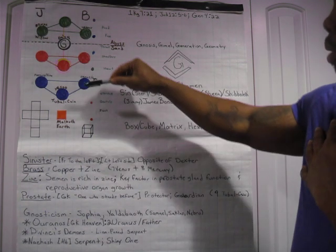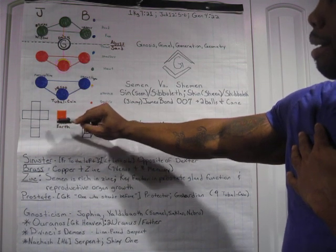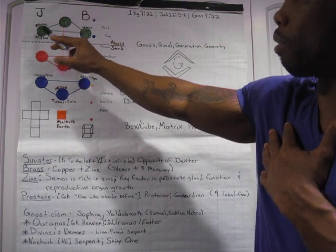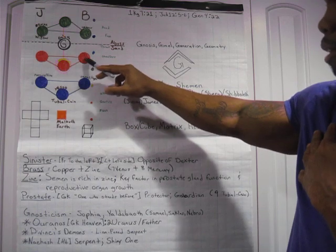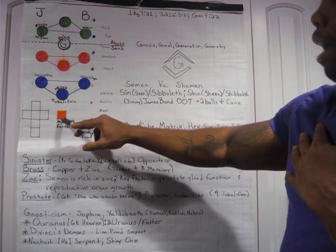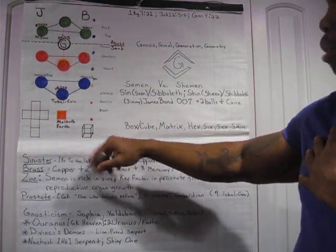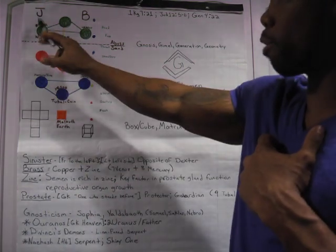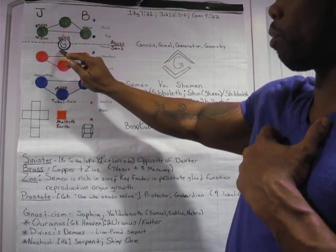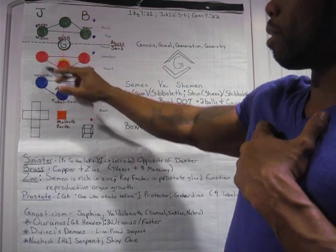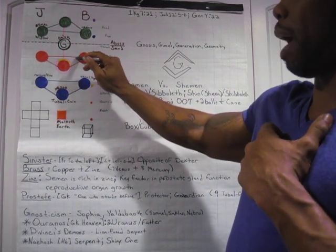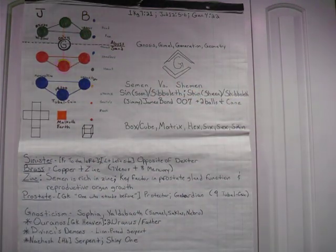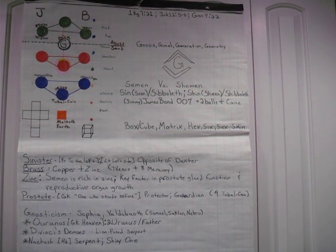What Yaldabaoth didn't know when he created humans was that there was a divine spark from his mother embedded in us. The point of the Gnostic story is to get us to awaken that divine spark so we can raise back up to our rightful position at the top.